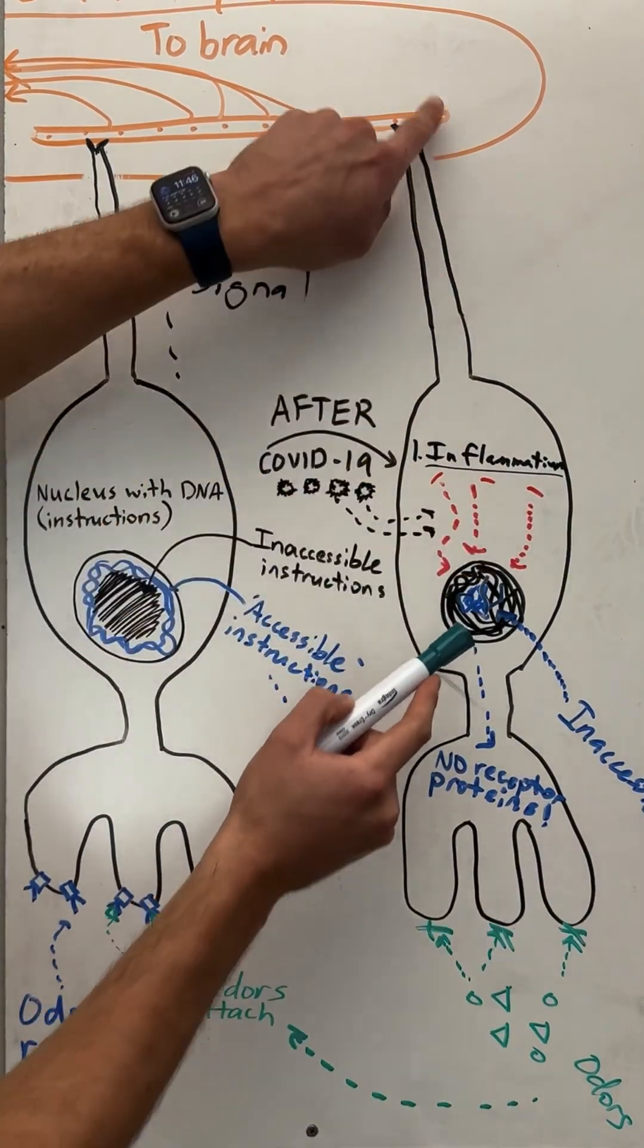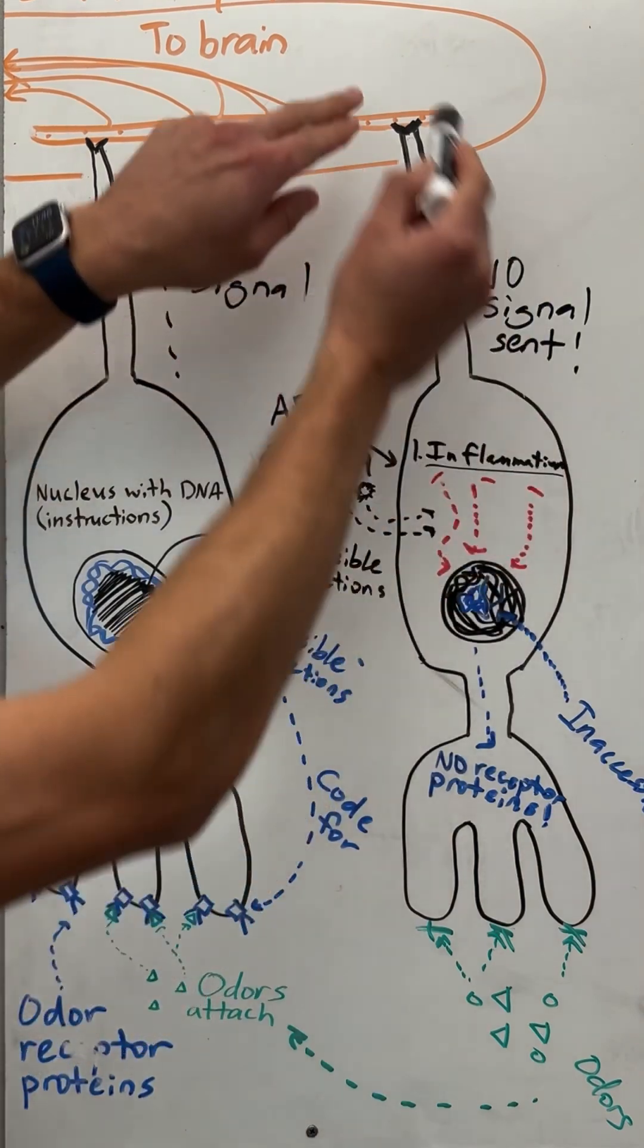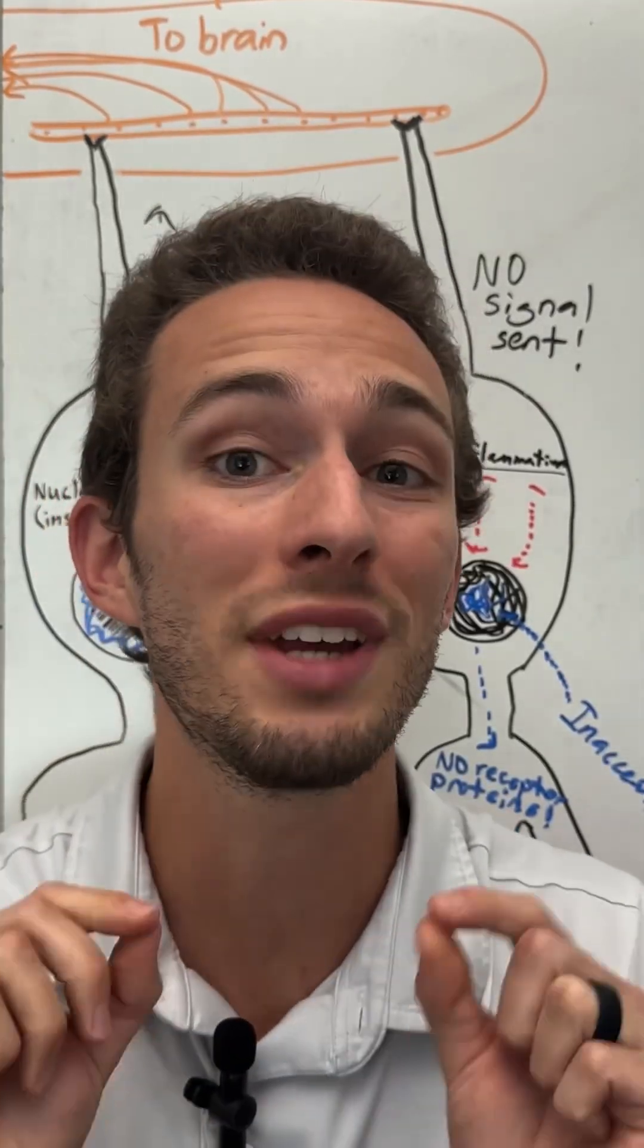If the odors can't attach, neuron won't send its signal. If there's no signals being sent, the brain's not getting any signals. And if the brain's not getting these signals, you can't smell.